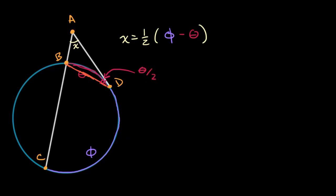Now we also know, we've done this in other videos, that when you have an inscribed angle and it intersects an arc, the measure of this angle is going to be half the measure of the arc that it intersects. So this angle right over here is going to be phi over two.